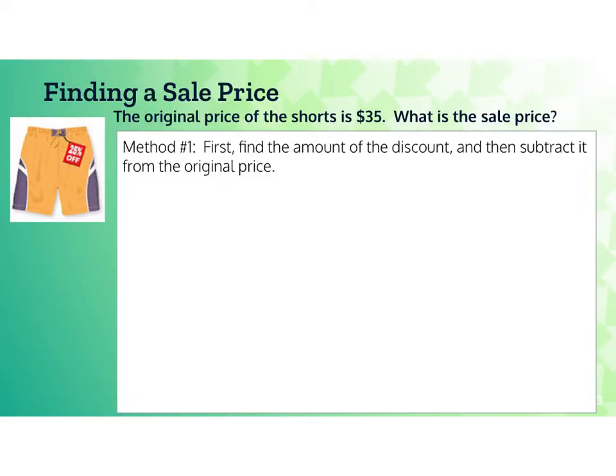When working with discounts and markups, there are a few different types of problems that we can solve. The first example, we're going to look at finding a sale price. The original price of the shorts is $35. What is the sale price?